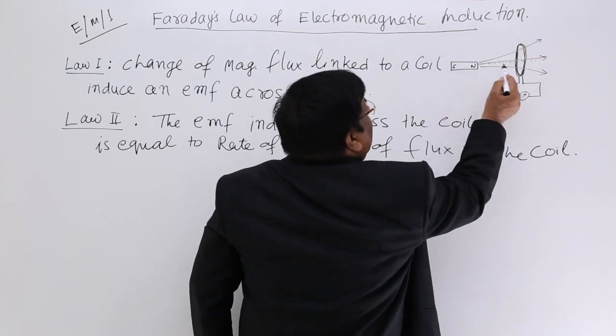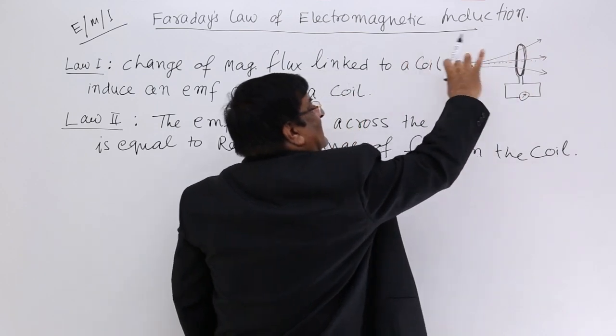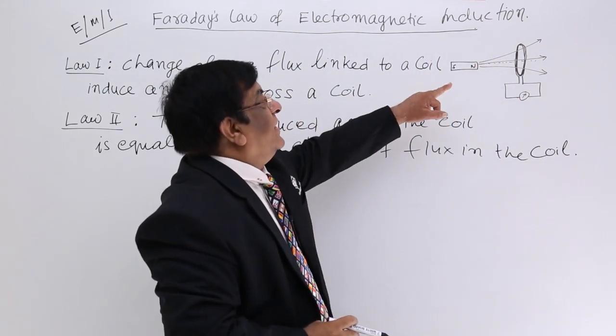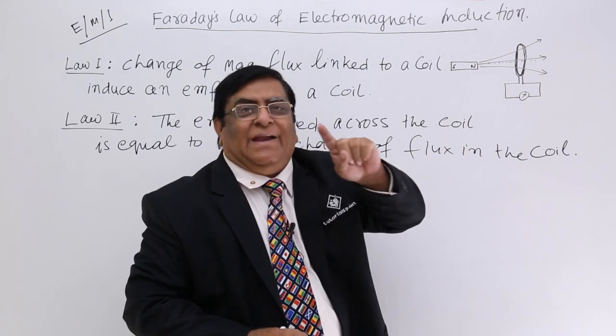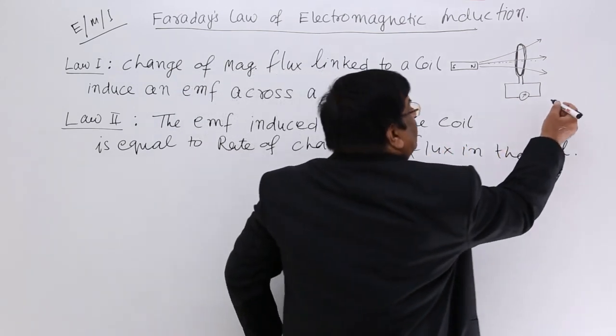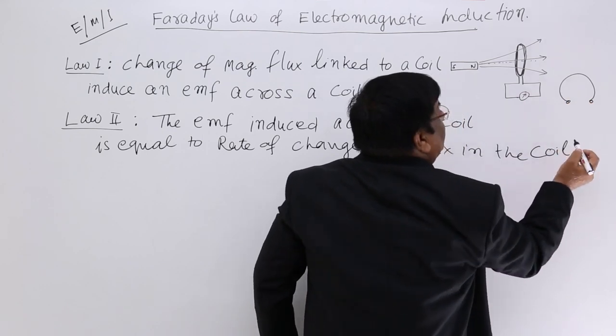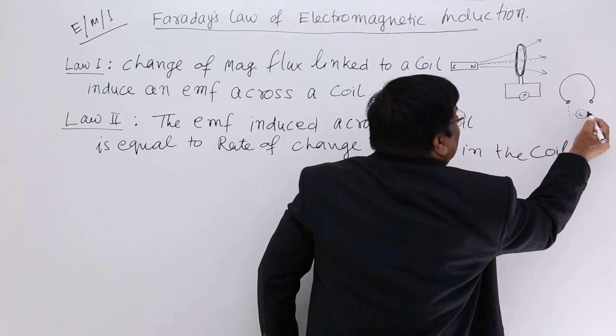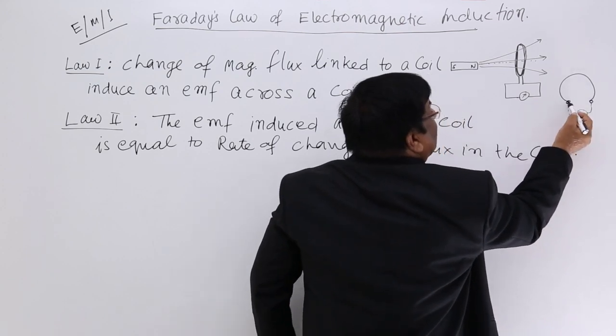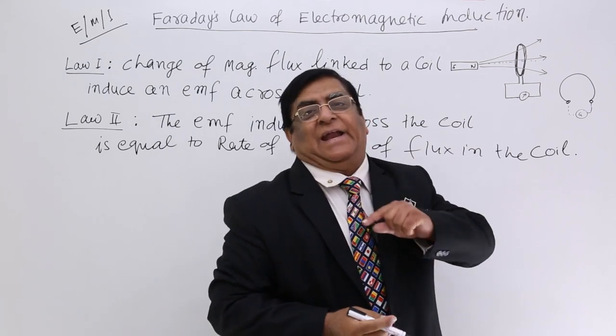This is magnetic flux linked to this coil, and if there is a change due to its motion, then an EMF is induced. Whenever there is an EMF induced between two points, if we close this circuit by fitting a galvanometer, then what is the job of an EMF? It produces current.